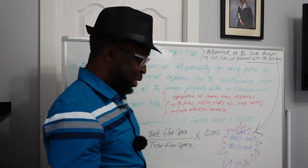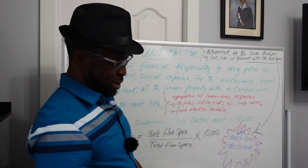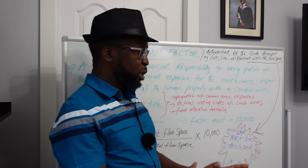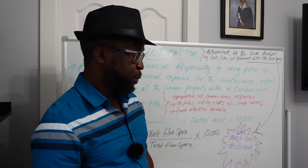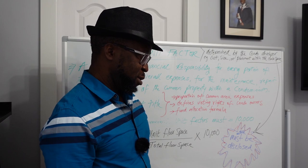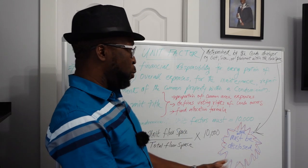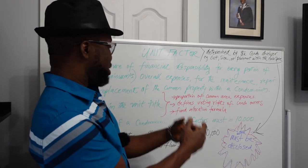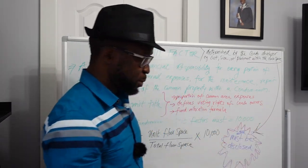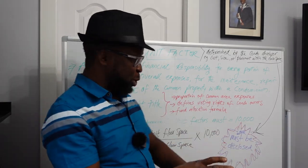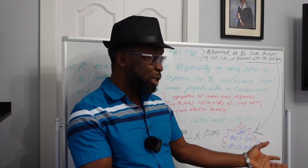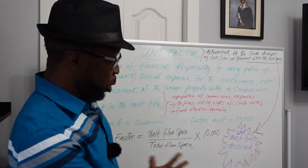The unit factor also defines the voting rights of the condominium owners. Because unit factor is not in decimal points, it must be a whole number. So any unit factor that you are assigned is also your voting rights. If you want to vote in a condominium, the whole total vote is counted as 10,000 votes.